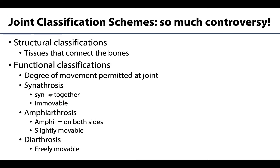The two major ways to describe joints are structurally, which describes the tissues that actually connect the bones — so the key here is what tissues are connecting the bones and where it's located. Remember, there will be some connective tissues between the bones always; bones don't actually touch. There will also be functional classifications, and these are really more describing the degree of movement permitted at a joint.